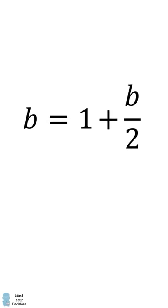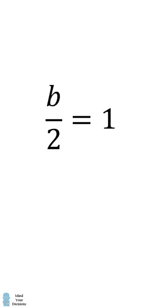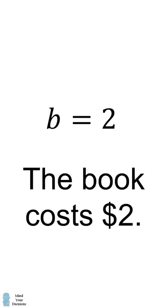b is equal to 1 plus b over 2. We subtract b over 2 from both sides, and then multiply both sides by 2. b is equal to 2. Therefore, the book costs $2.